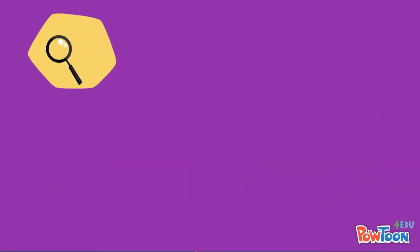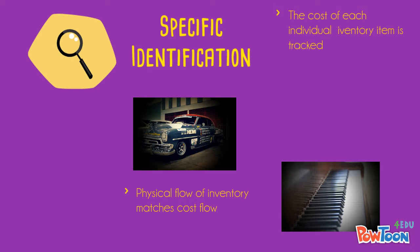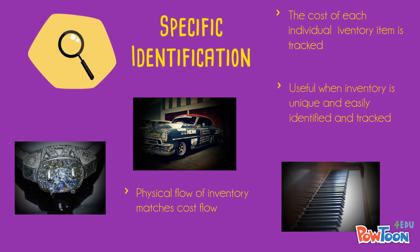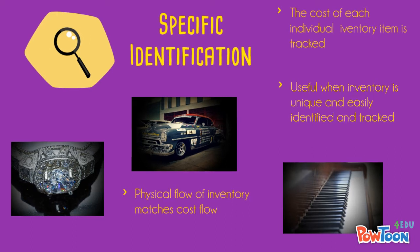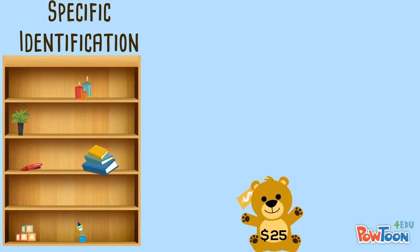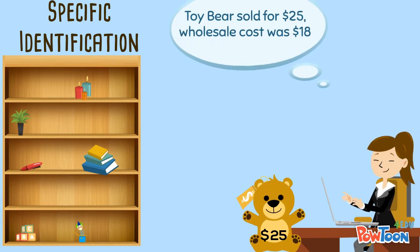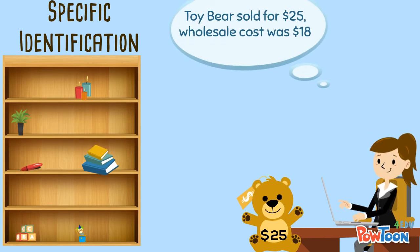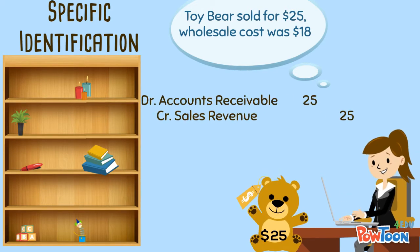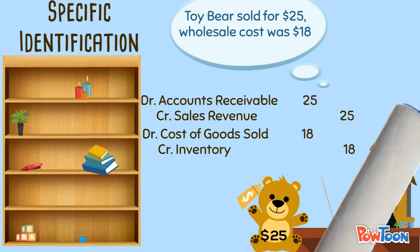Under Specific Identification, we can easily identify what item was sold and the original cost. This is generally used when you have a limited number of inventory items that are easily tracked and identified. For example, if we sell one teddy bear that had an original cost of $18 and a sales price of $25, we could do the journal entry to record the sale and cost of goods sold for that specific item. The sales price is our revenue and the cost of goods sold is the expense.